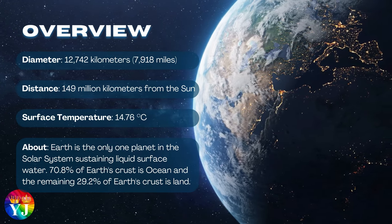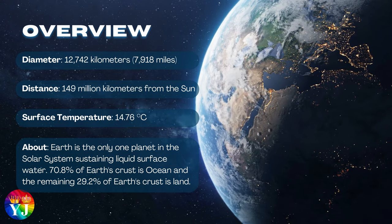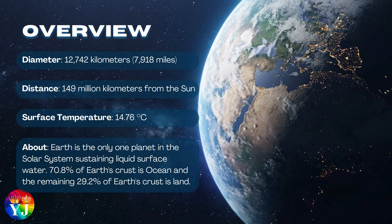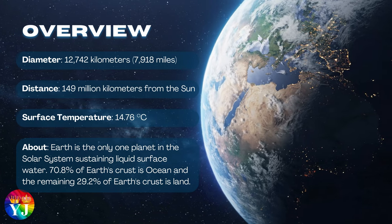About Earth: Earth is the only planet in the Solar System sustaining liquid surface water. 70.8% of Earth's crust is ocean and the remaining 29.2% of Earth's crust is land.